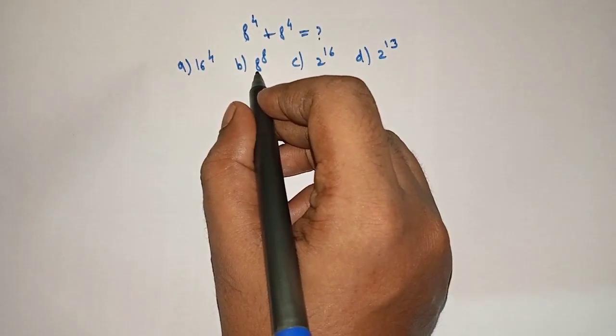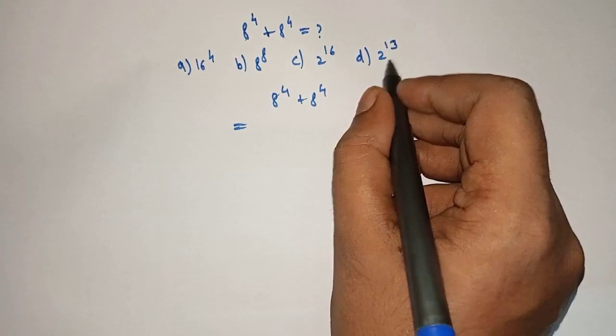Option A, 16 raised to 4. Option B, 8 raised to 8. Option C, 2 raised to 16. Option D, 2 raised to 13.